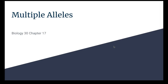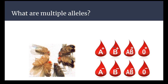Hi everyone. In this video, we're going to be talking about the next mode of inheritance called multiple alleles. We're going to start out by talking about what that even is. If you have something that's a multiple allele, it means that rather than having a dominant and a recessive or two different versions of the trait, there are actually more versions.